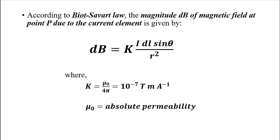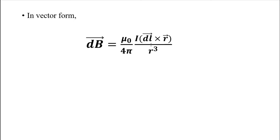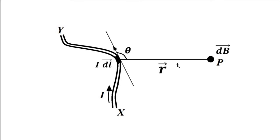Here, the constant k equals μ₀ / 4π, where μ₀ is the absolute permeability. In scalar form the expression is dB = (μ₀ / 4π) · I·dl · sin θ / r². In vector form it is represented as: dB vector = (μ₀ / 4π) · (I · dl vector × r̂) / r³, where the numerator is the cross product of the length vector dl and the position vector r.